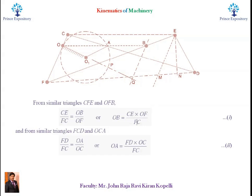And also, from the same figure, from the similar triangles F-C-D and O-C-A, F-D by F-C is equal to O-A by O-C. And if we write down in the form of O-A, it will give F-D into O-C as numerator and F-C as denominator.